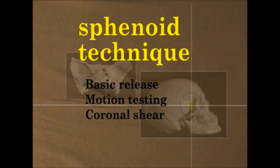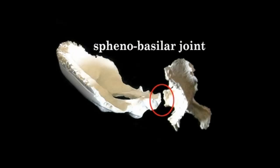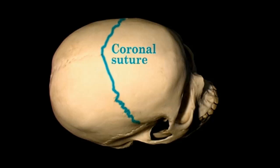Coronal shear. After performing the basic sphenoid technique, you may want to listen more deeply to the bone, especially if you have noticed a movement pattern that seems irregular. If the sphenoid seems to be stuck or severely compressed, use the coronal shear technique. It is one of the most effective techniques to sense the movement in the sphenobasilar joint. This grip frees the coronal suture and facilitates motility in the sphenoid and occiput. It is used most often to treat and monitor severe trauma which results in a compression lesion. A compression lesion is felt as no movement. This lesion is the most dysfunctional that can be felt.